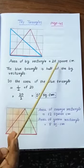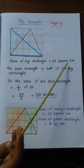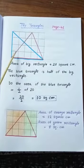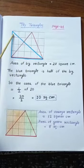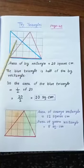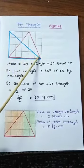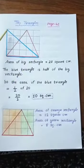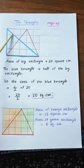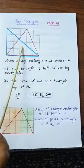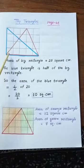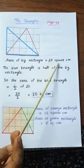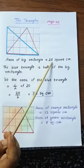Children, here we write the unit. The unit of area is square centimetres, so we write 20 square centimetres. We have found the area of the rectangle. Now, we have to find the area of the blue triangle. If you observe carefully, when we divide this rectangle exactly diagonally, we get two blue triangles. This blue triangle is exactly half of the big rectangle. So the area of the blue triangle is half of the big rectangle — that is, half of 20 square centimetres.